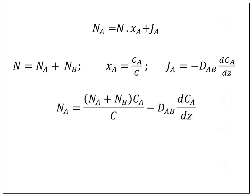Putting these values in the above equation, the expression becomes Na equals (Na plus Nb) CA by C minus DAB dCA by dZ.